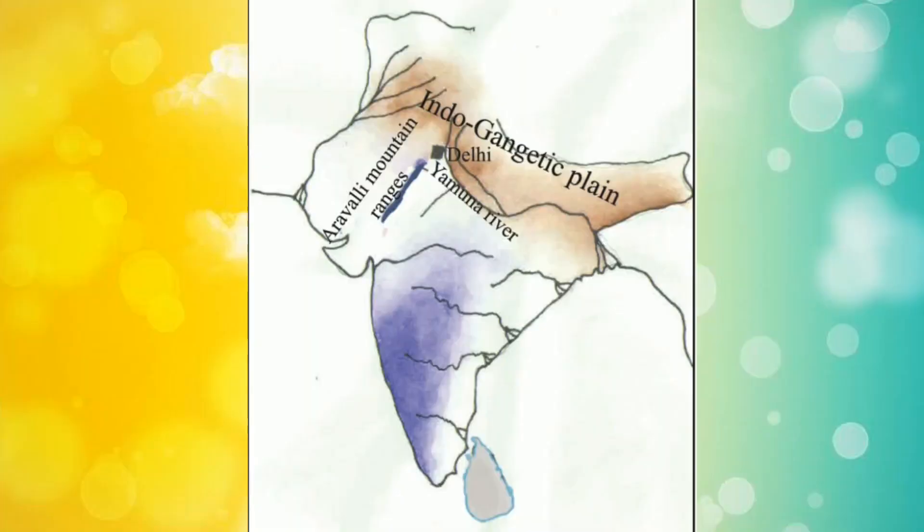Now let's look at the topography or a map of Delhi. On the map, we can see the Aravali mountain ranges, the Yamuna River, and the Indo-Gangetic Plain. These are the three main features of Delhi.